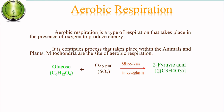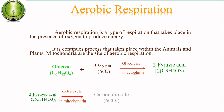Glycolysis process occurs inside the cytoplasm, in which glucose reacts with oxygen, and in the glycolysis process, forms two molecules of pyruvic acid. Pyruvic acid enters the mitochondria, and there through the Krebs cycle process, forms carbon dioxide, water, and 32 ATP. ATP is an energy compound. Mitochondria is also called the powerhouse of the cell.